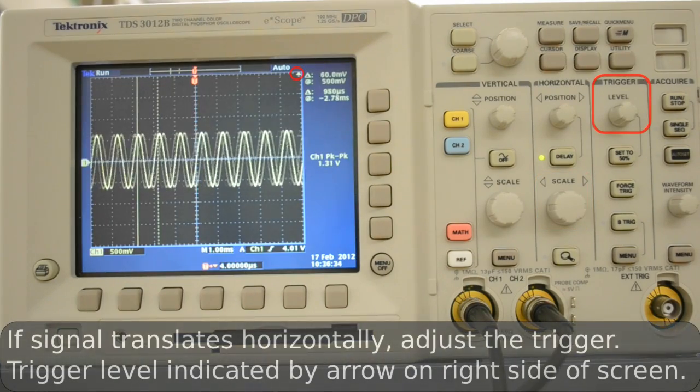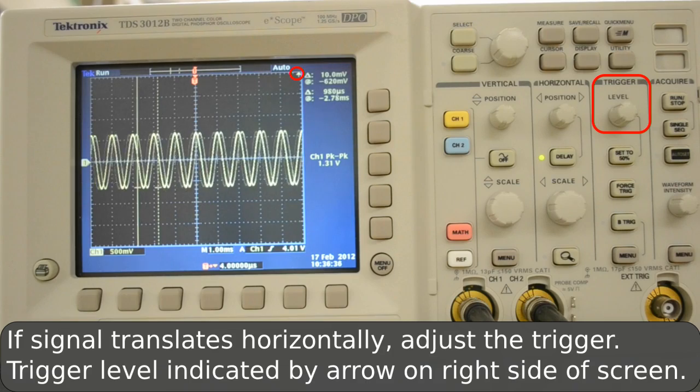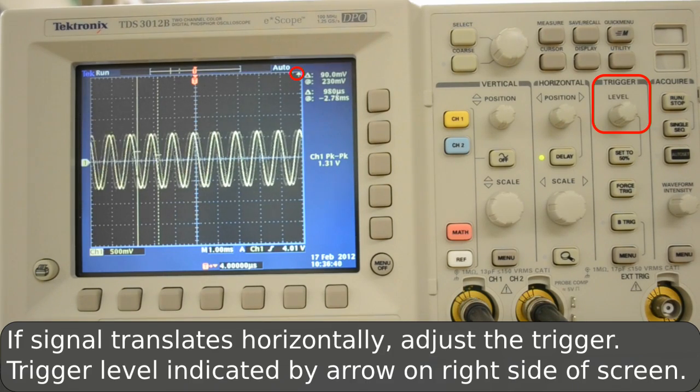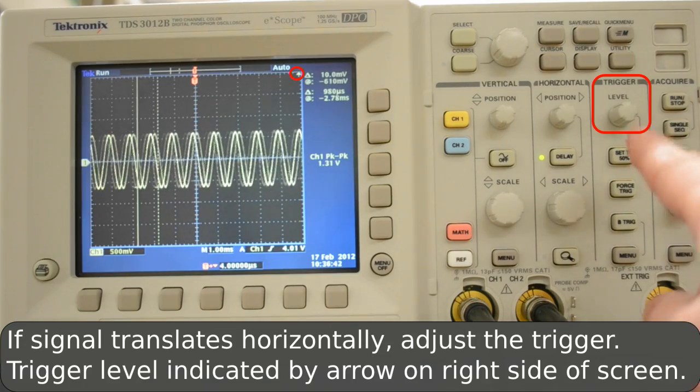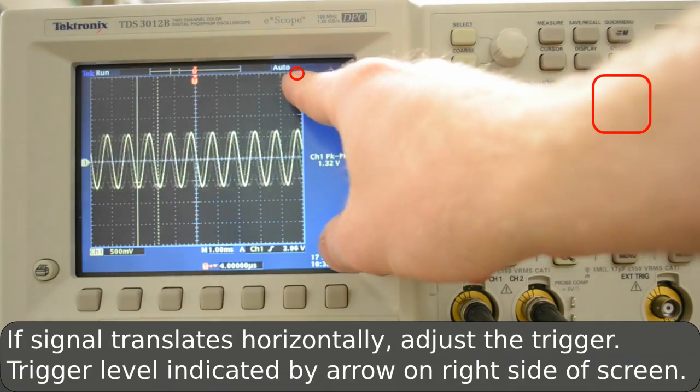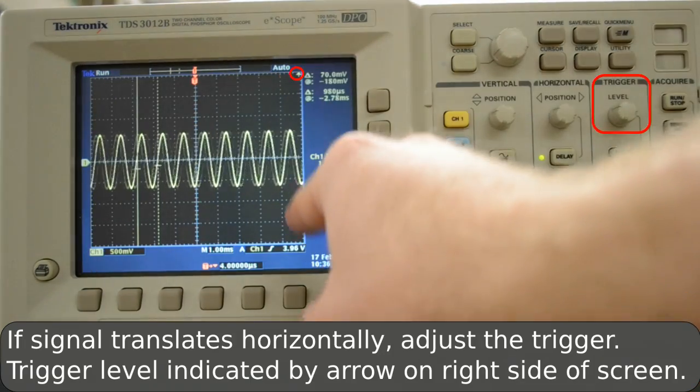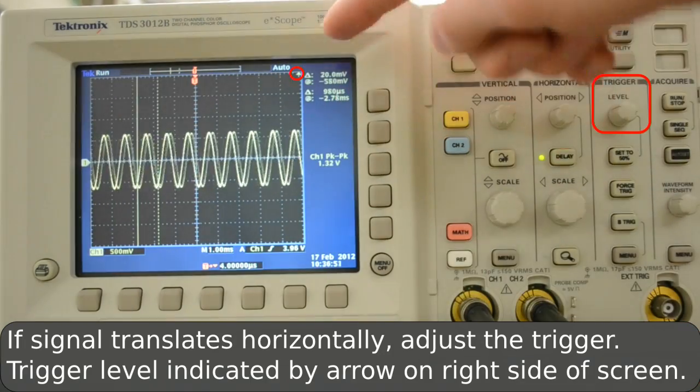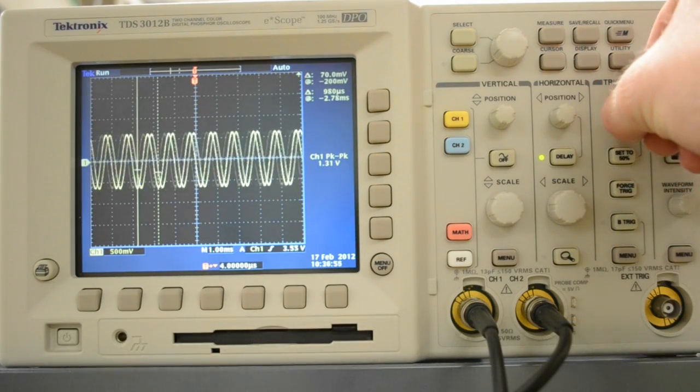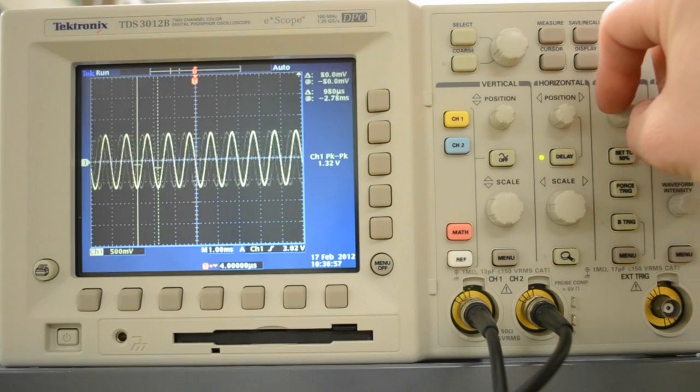If your signal is translating across the screen this way, you need to adjust what's called the trigger. The trigger is adjusted here and it's indicated by an arrow on this right side of the screen. Right now the arrow is right there, so I'll adjust the trigger downward.